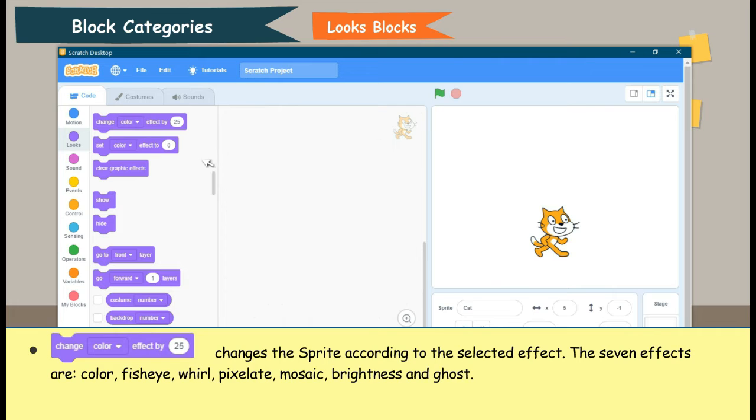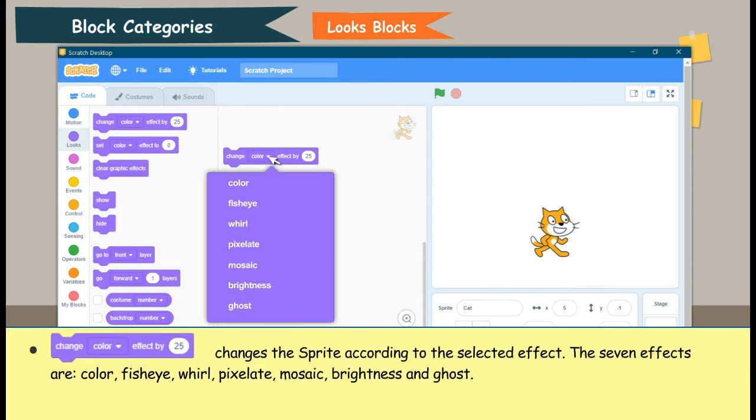Change Color effect by 25 changes the sprite according to the selected effect. The 7 effects are Color, Fish Eye, Whirl, Pixelate, Mosaic, Brightness, and Ghost.